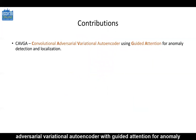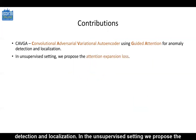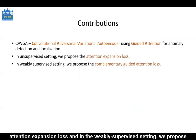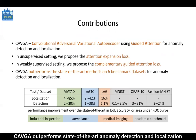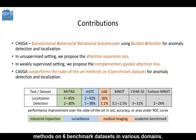The contributions in our work are that we propose a Convolutional Adversarial Variational Autoencoder with guided attention for anomaly detection and localization. In the unsupervised setting, we propose the attention expansion loss, and in the weakly supervised setting, we propose the complementary guided attention loss. CAVGA outperforms state-of-the-art anomaly detection and localization methods on six benchmark datasets in various domains.